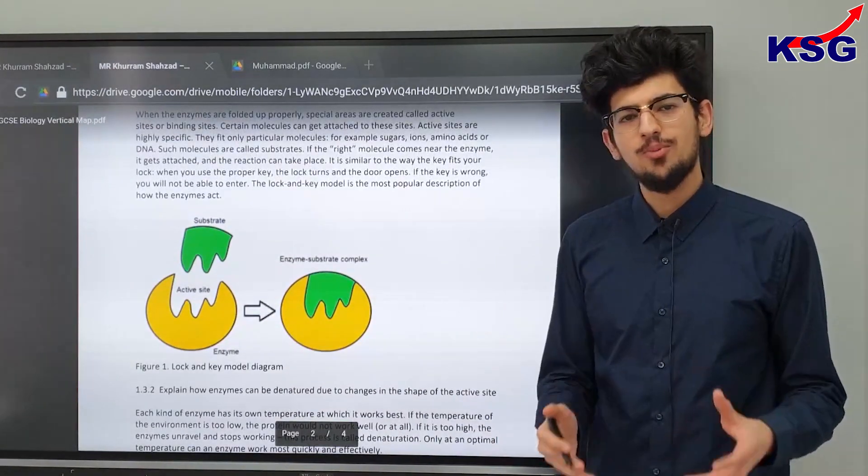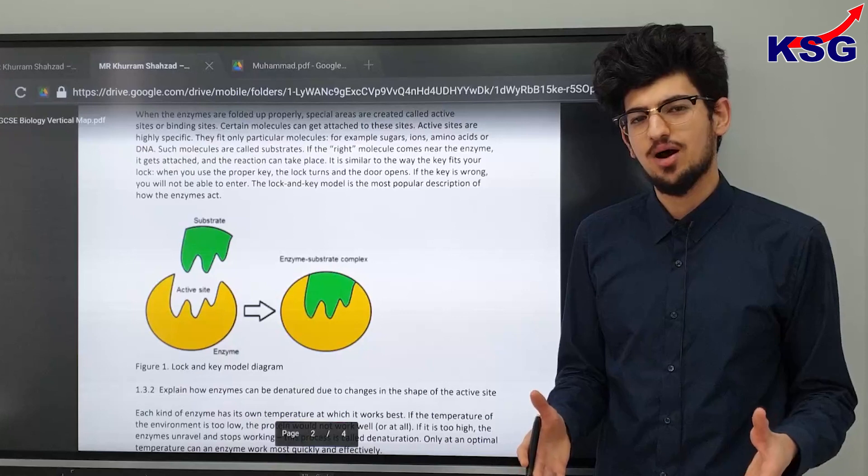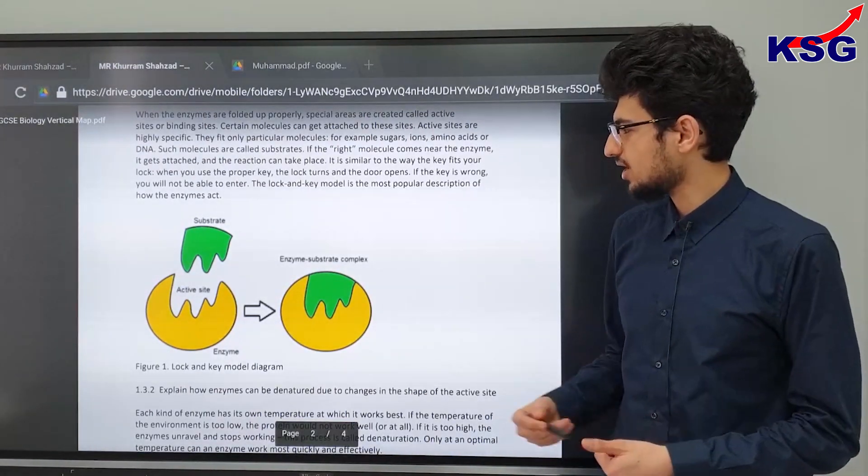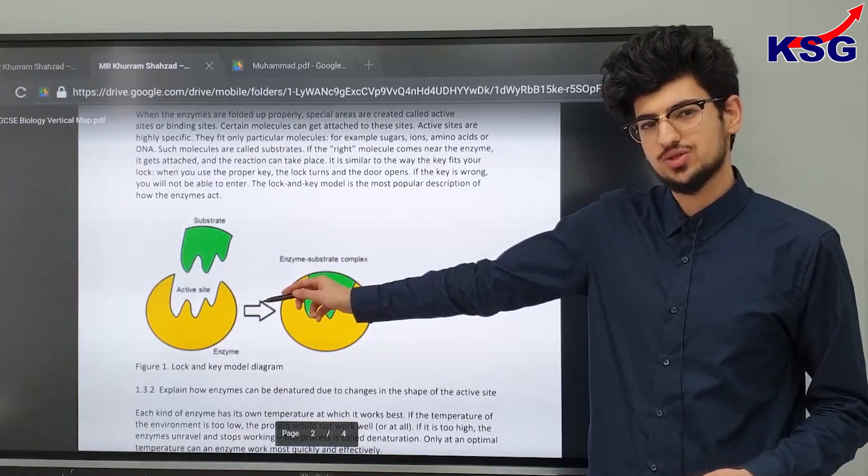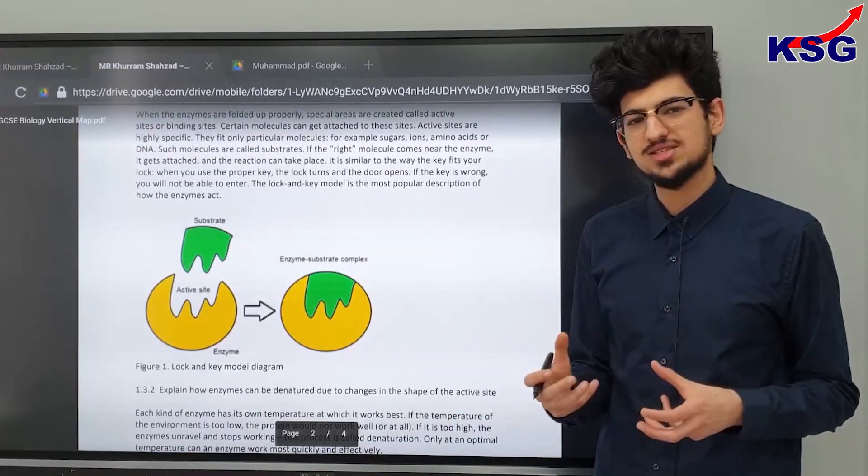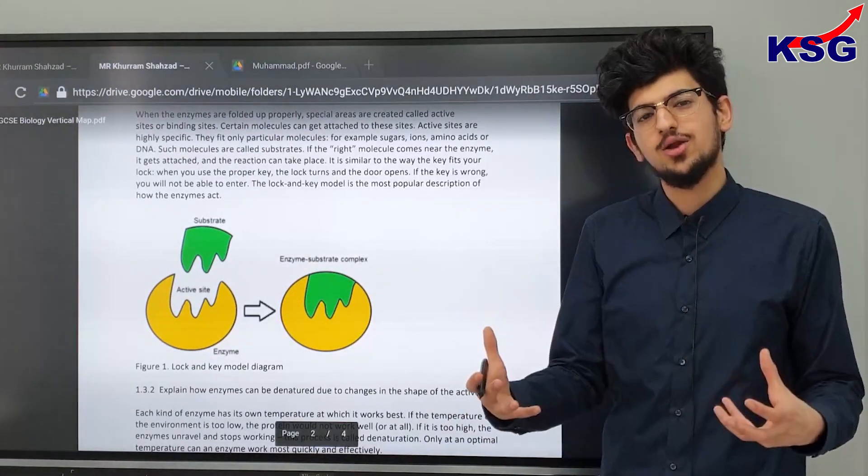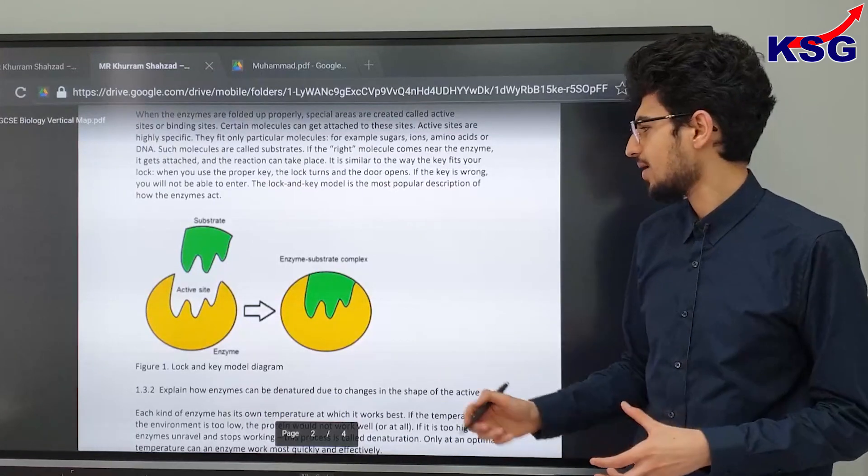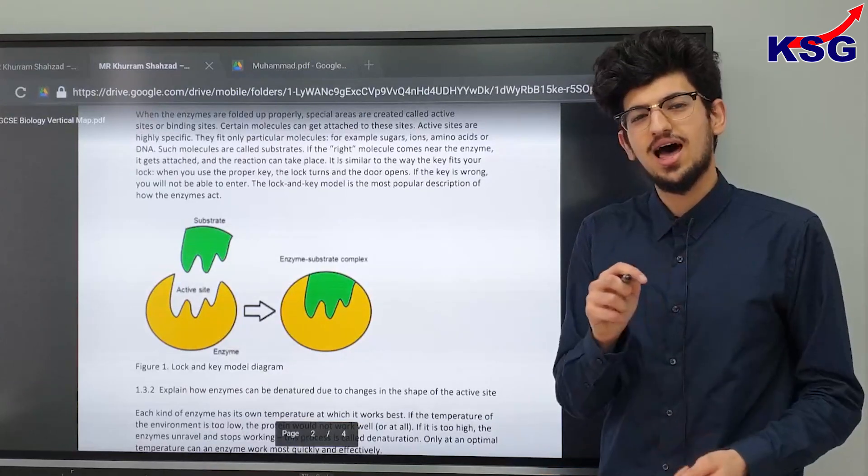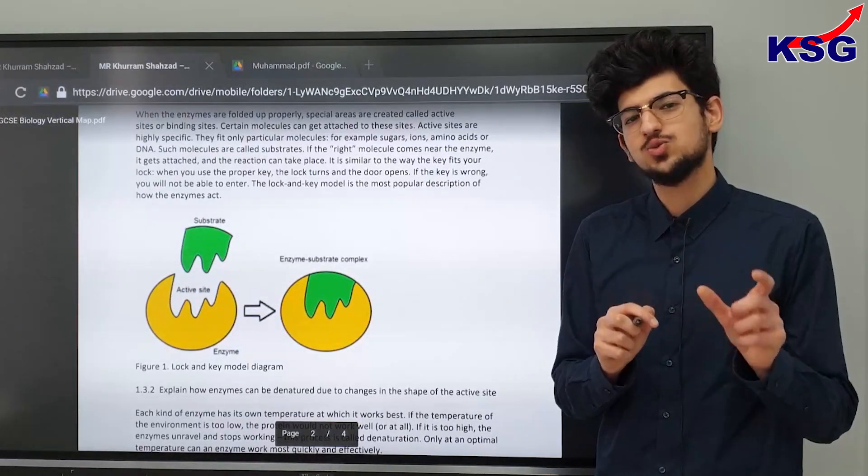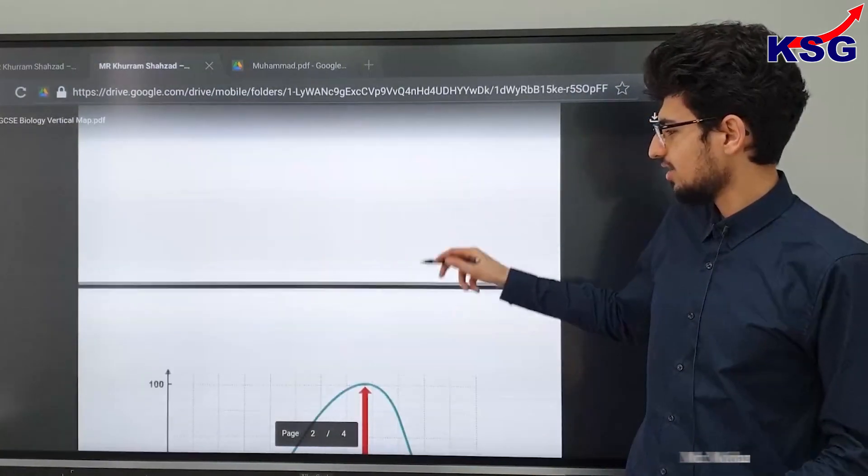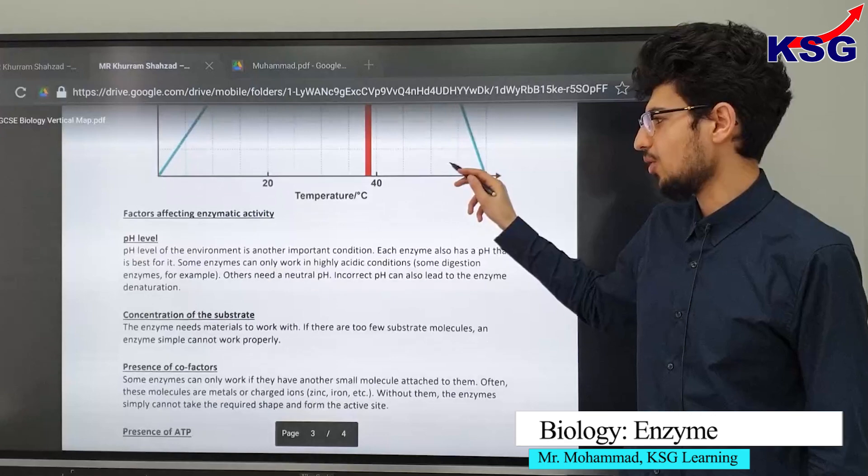Now there are a couple of things that we need to ensure we're mentioning in any exam answer for asking about this question. Firstly we need to be mentioning the complementary fit between the two. So thereafter we'll be talking about the active site being complementary in shape to the substrate and when they bind we need to be mentioning an enzyme substrate complex that then catalyzes the reaction. These are underlined in the mark scheme meaning that if these words are not mentioned you will not be able to get the marks.